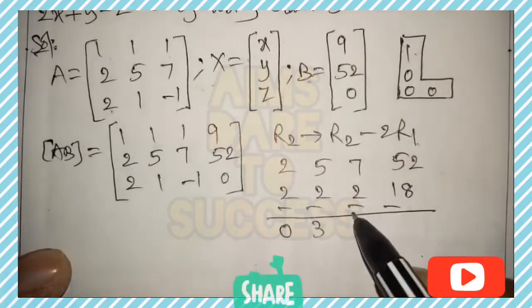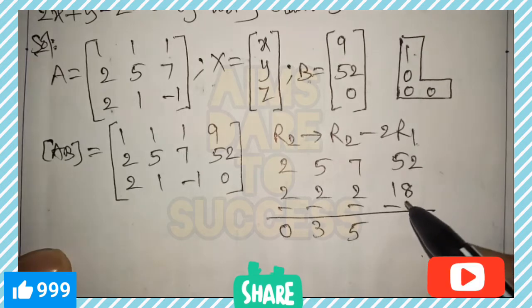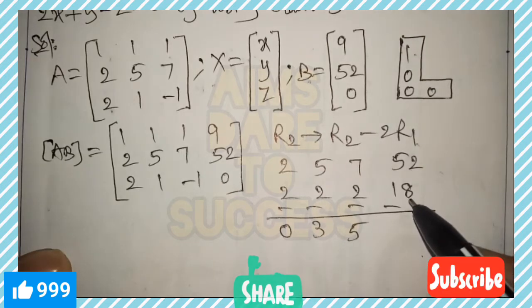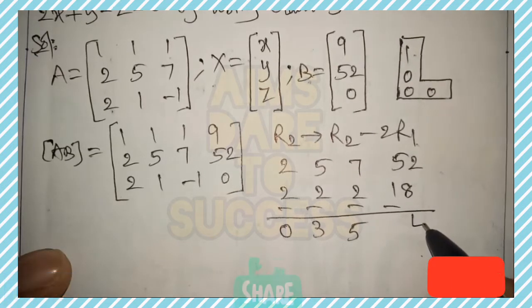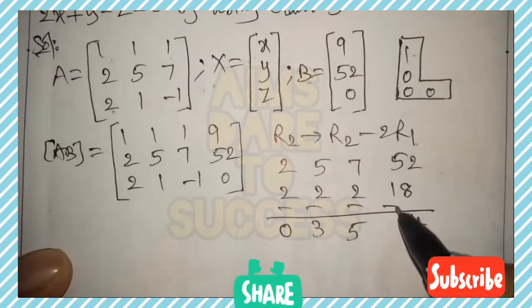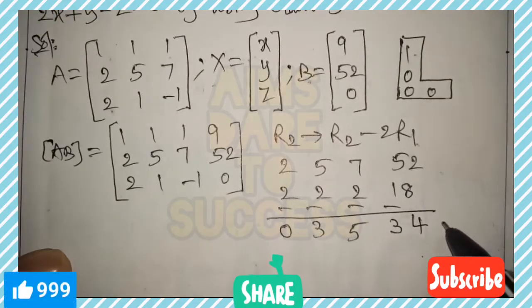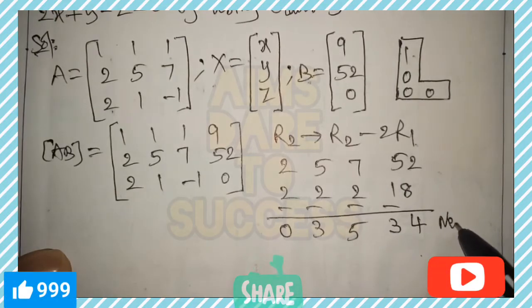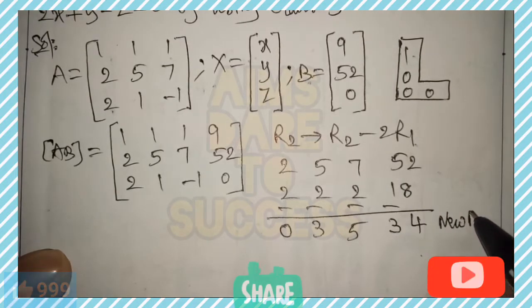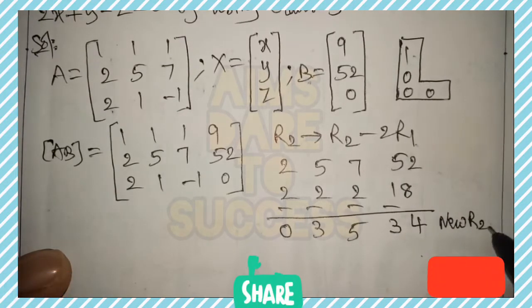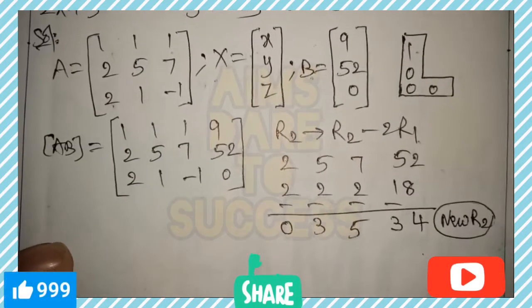R2 → R2 - 2R1: R2 is [2, 5, 7, 52], and 2 times R1 is [2, 2, 2, 18]. Subtracting: 2-2=0, 5-2=3, 7-2=5, 52-18=34. The new R2 is [0, 3, 5, 34].